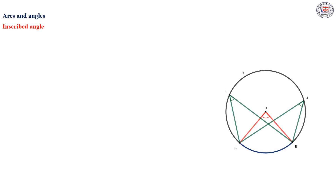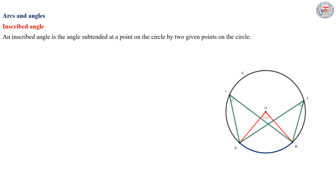Another property concerning arcs and angles is that of the inscribed angle. By definition, an inscribed angle is the angle subtended at a point on the circle by two given points on the circle. For example, in this figure, the two angles AIB and AJB are two inscribed angles, since their vertices I and J are points on the circle, and the angles are subtended by two points A and B that are also on the circle.